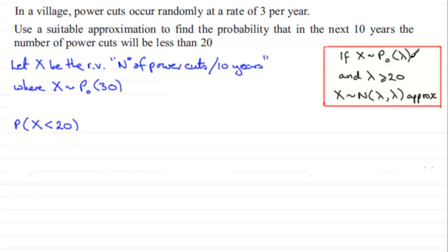If x follows a Poisson distribution with a mean of lambda, and lambda is greater than or equal to 20, then the random variable x follows a normal distribution approximately with a mean of lambda and a variance of lambda. Since that mean lambda is greater than 20, it's 30 in this case, then x is distributed approximately as a normal distribution with mean 30 and variance 30.